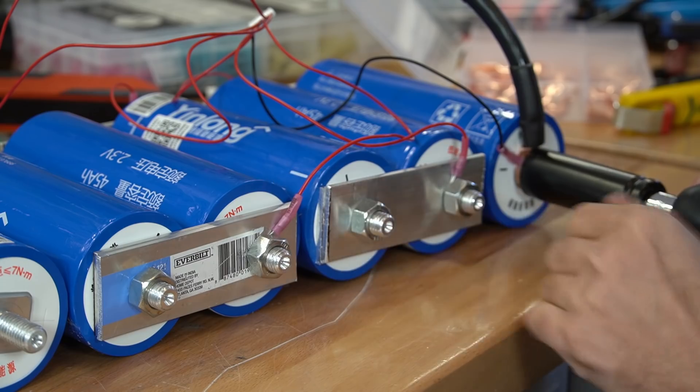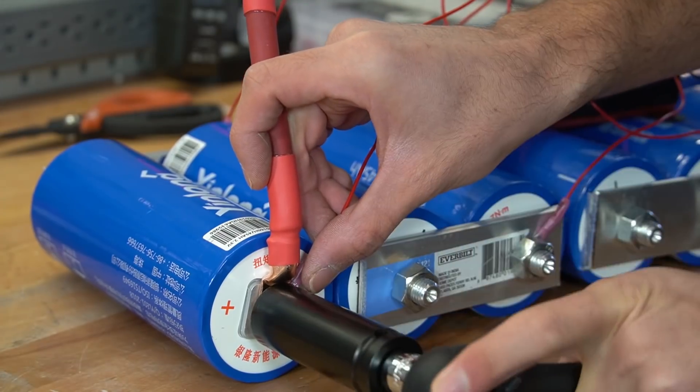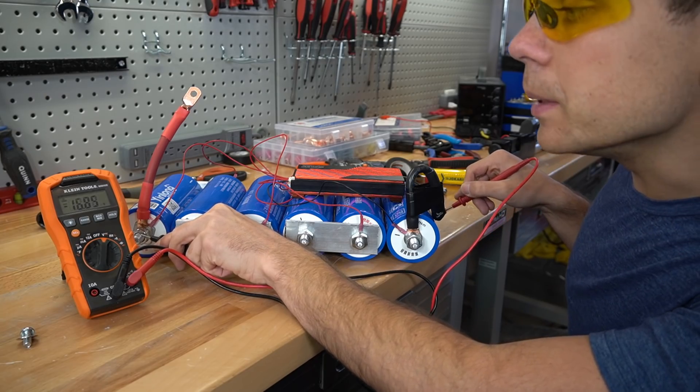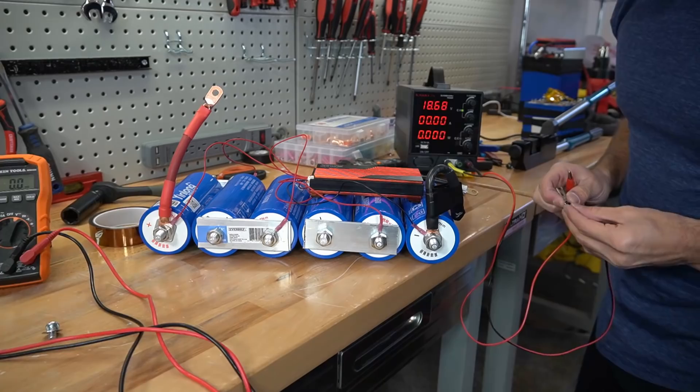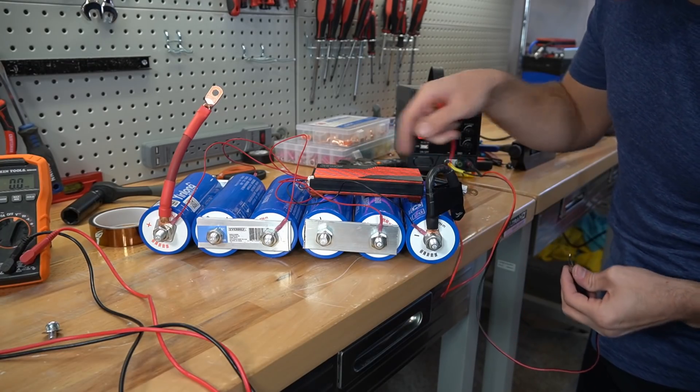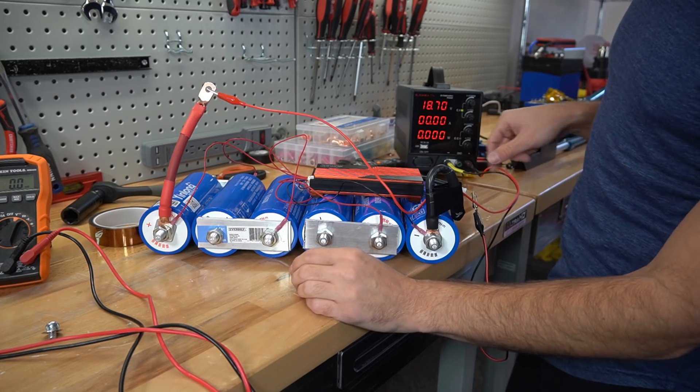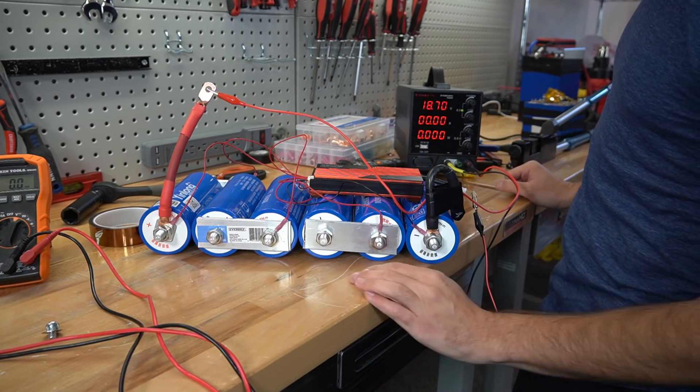The bus bar is flush with the cells terminal. Now the BMS is installed so let's check the voltage at the BMS output and we have 16.8 volts. Now that we have a BMS, we're going to charge this battery up until we hit high voltage disconnect. And look at that, we already hit high voltage disconnect. So this pack is fully charged.